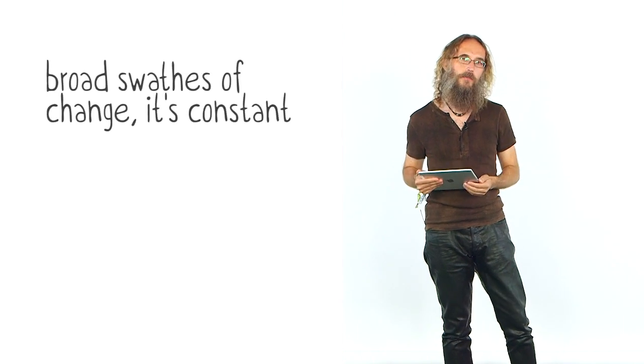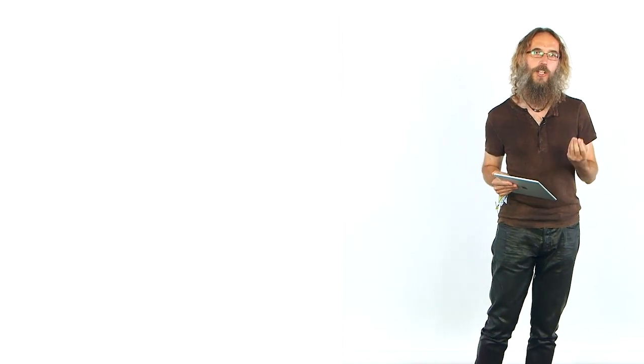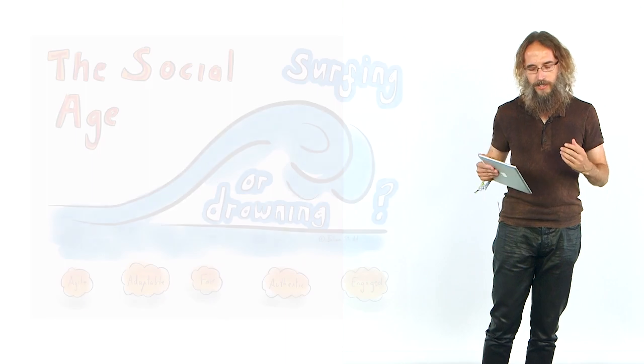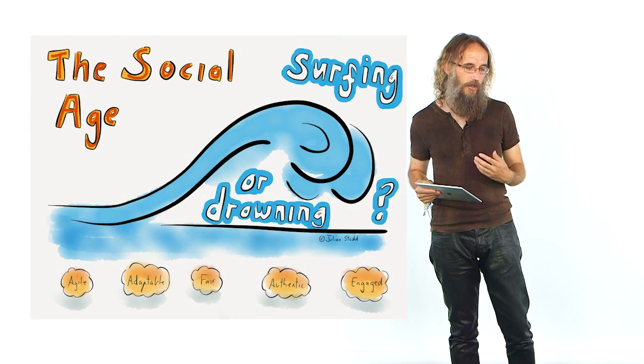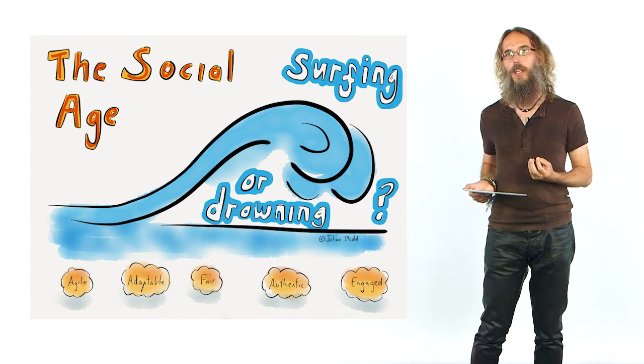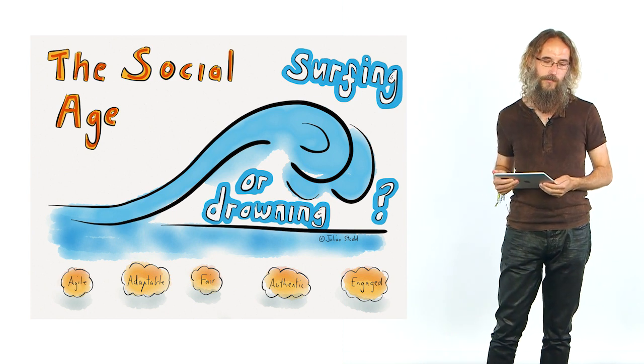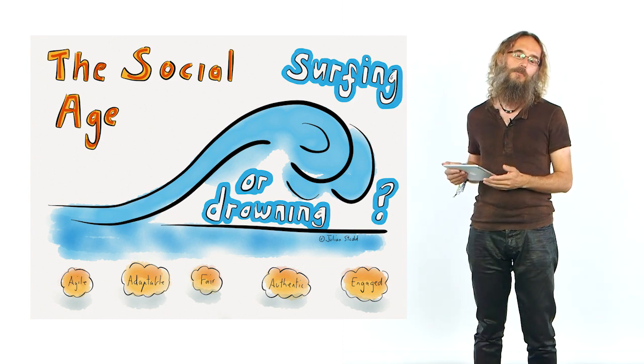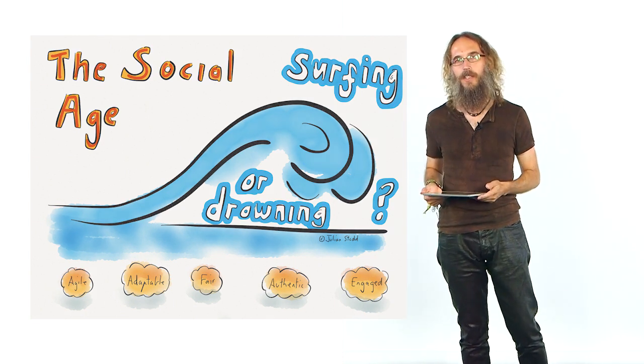The social age represents broad swathes of change, and that change is constant. Any organization or individual who thinks they can react to that change more effectively is missing the point. We need to be adapted to surf on those waves of change. It's not something which is going to bother us because it's something which is constant. Indeed, we should view that change as the fuel of our own energy and agility. When the ecosystem changes around us, we have to adapt. Those that fail to adapt are the ones that go extinct.